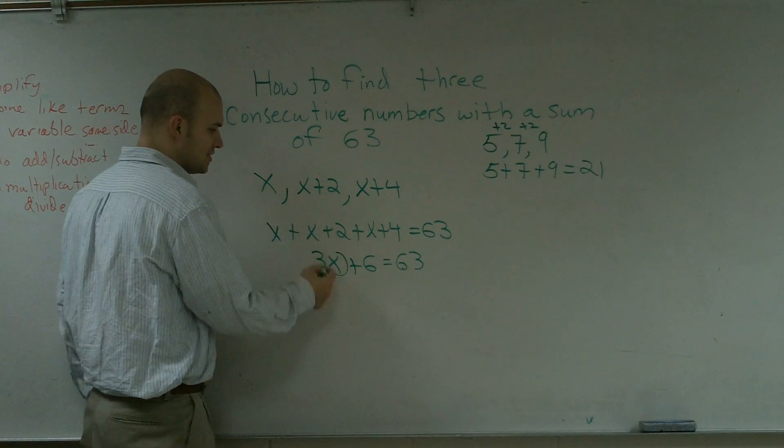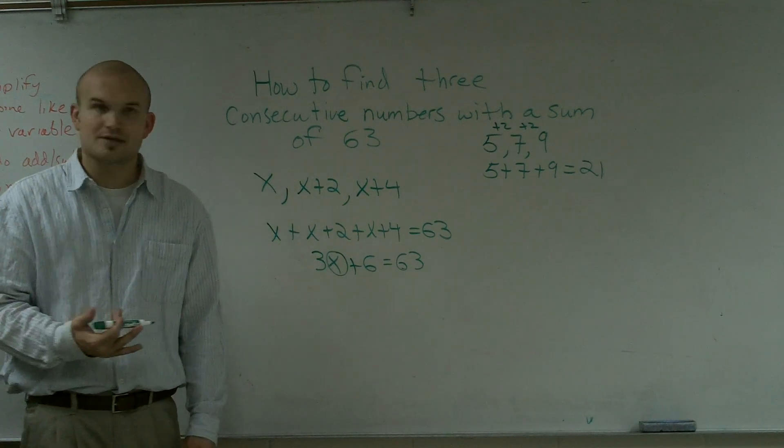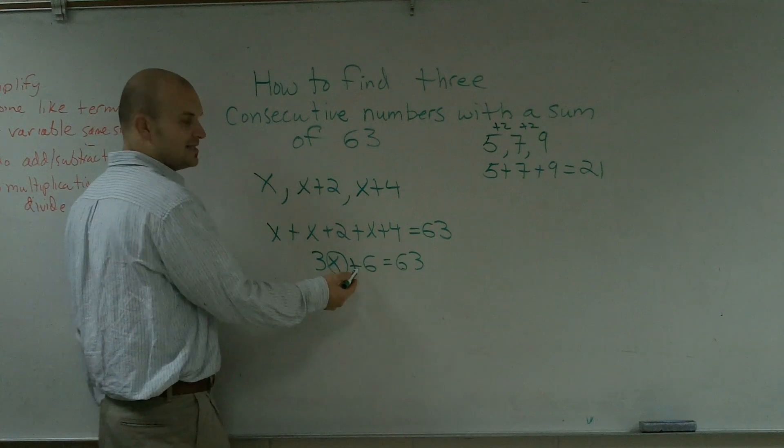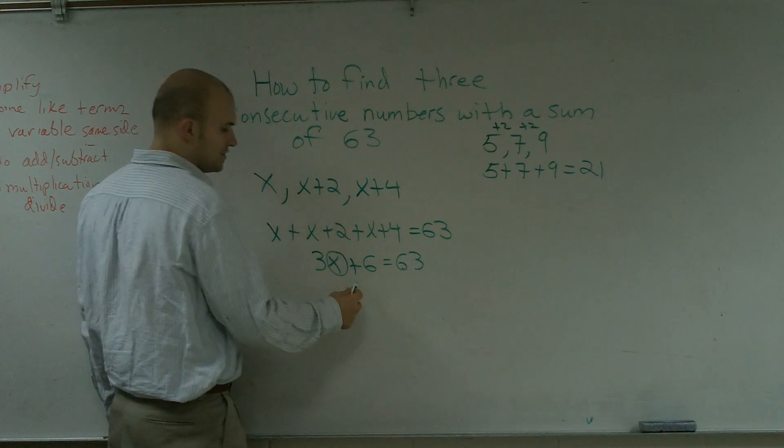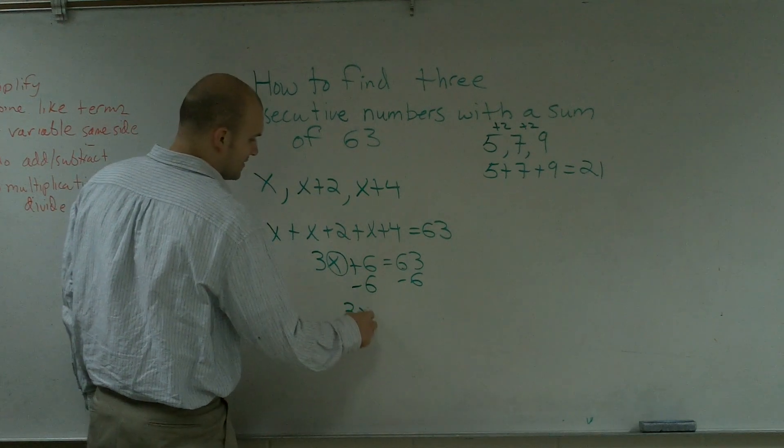You always look at your variable. You circle your variable and you say, first, I'm going to undo addition and subtraction by using inverse operation. Since it's being added to my variable, I'm now going to subtract 6 on both sides by using the subtraction property of equality. So then I have 3x equals 57.